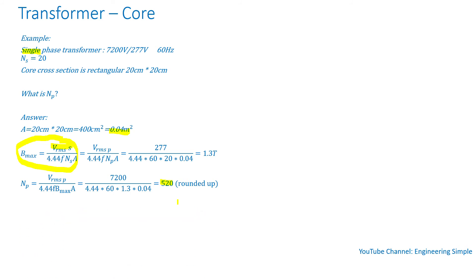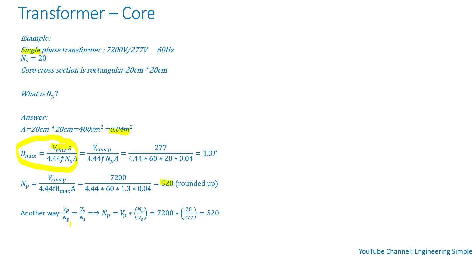As a quick check, this makes sense — the side with the higher voltage will have the highest number of turns, so 520 turns on the primary versus 20 turns on the secondary. Another way of calculating the number of turns in the primary is using the volts-per-turn equation shown in a different video. The volts per turn in the primary equals the volts per turn in the secondary, so the number of turns in the primary is voltage in the primary winding times number of turns in the secondary divided by voltage in the secondary winding. This gives the same number.